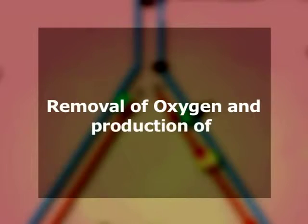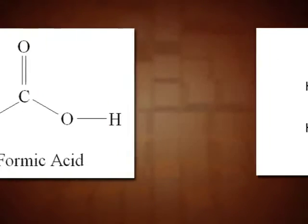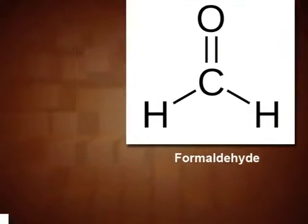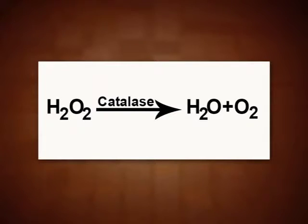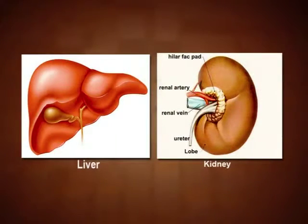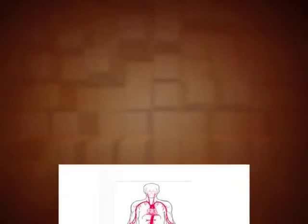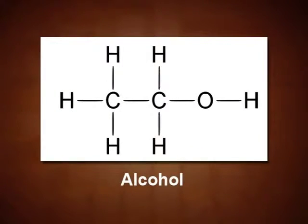Function 1 - Removal of Oxygen and Production of Hydrogen Peroxide: Peroxisomes contain enzymes that use molecular oxygen to remove hydrogen from organic substances and produce hydrogen peroxide. This hydrogen peroxide is utilized by catalase to oxidize a variety of substances including phenols, formaldehyde, and alcohol. Catalase also converts excess hydrogen peroxide into water and oxygen. These oxidative reactions are particularly important in liver and kidney cells for detoxification of various toxic molecules that enter the bloodstream. For instance, 25% of ethanol we drink is oxidized to acetaldehyde in this manner.